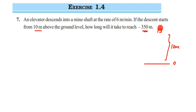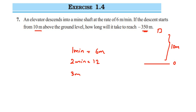Right now the elevator is 10 meters above the ground level. They have given that it descends 6 meters per minute, so in 1 minute it descends 6 meters, in 2 minutes 12 meters, in 3 minutes 18 meters, and so on. The target is minus 350 meters — the minus sign indicates it is below the ground, and the 10 meters is above the ground level.